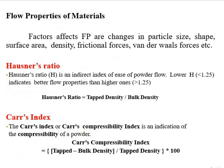The next important parameter under physical properties is flow properties. Factors that affect flow properties include changes in particle size, shape, surface area, density, frictional forces, and van der Waals forces. The Hausner ratio is an indirect index of ease of powder flow. If the Hausner ratio is less than 1.25, flow properties are good; if greater than 1.25, flow properties are not good. The formula is: Hausner ratio = tap density ÷ bulk density. The Carr's compressibility index is calculated as: (tap density − bulk density) ÷ tap density × 100.